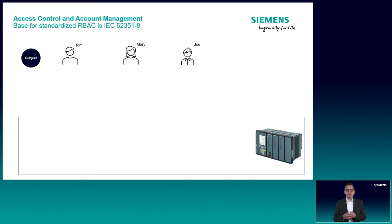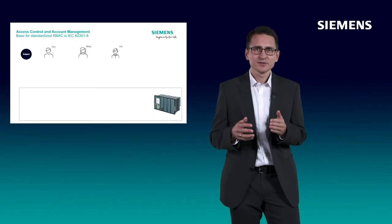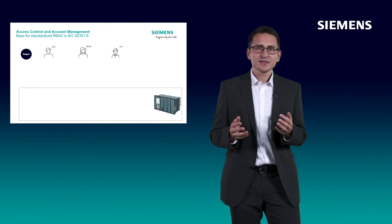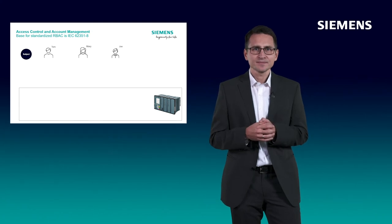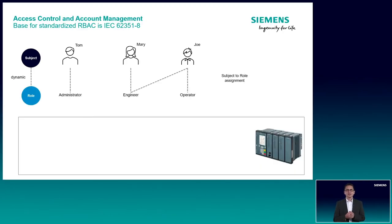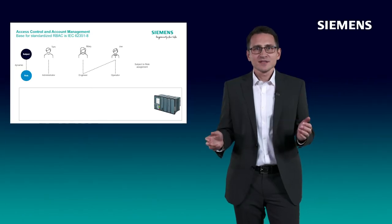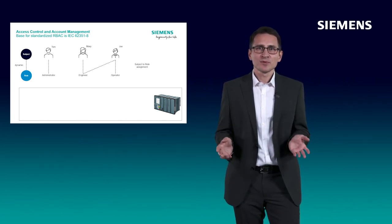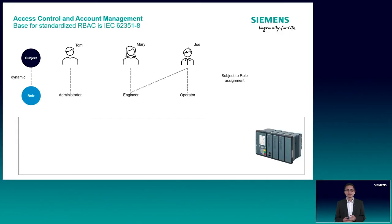Let me explain the concept based on this example. We see three different persons: Tom, Mary, and Joe. The standard uses the term subject for the persons. All of them want to perform a specific task on an IED. Each of the persons is assigned to one or more roles, depending on their job profile. This assignment is dynamic and can change, for example when an employee gets a new job role or retires. The roles are predefined in the standard. There are more roles than shown in this example.